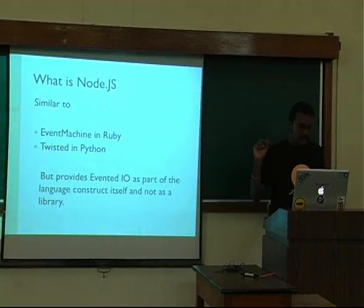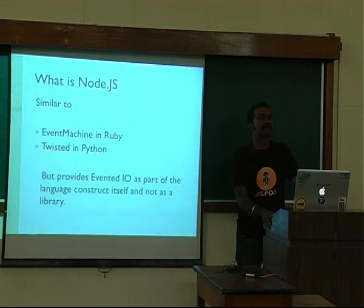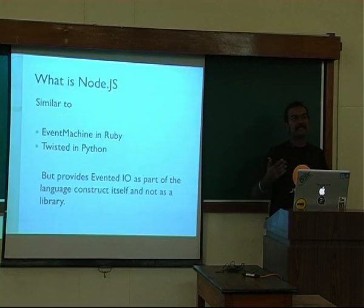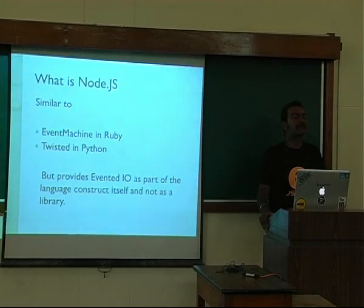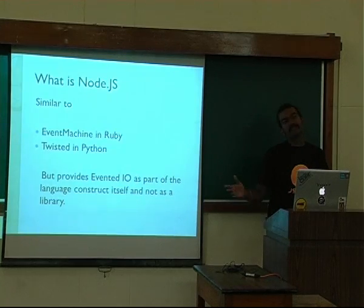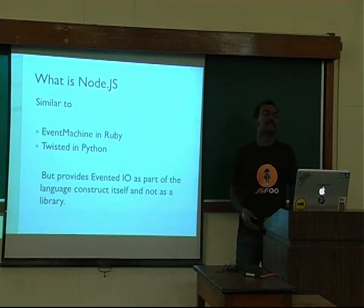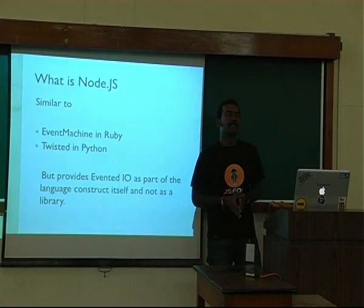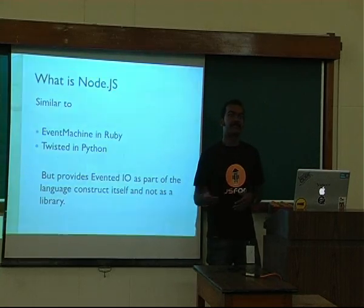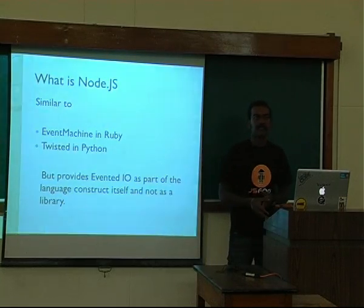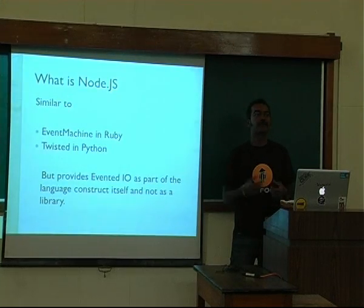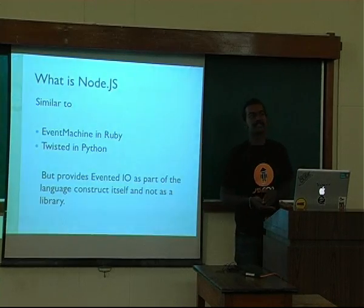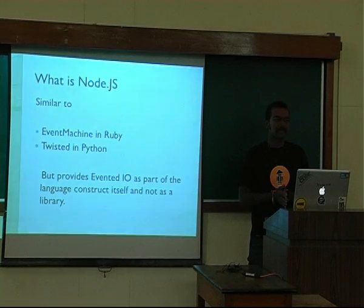Was Node.js the first evented system available? No. There were other evented systems before Node.js, like the Twisted framework from Python or the Event Machine from Ruby. The main difference is that Node.js provides evented IO as a language construct rather than as a library or framework — all those others provided it more as a framework.